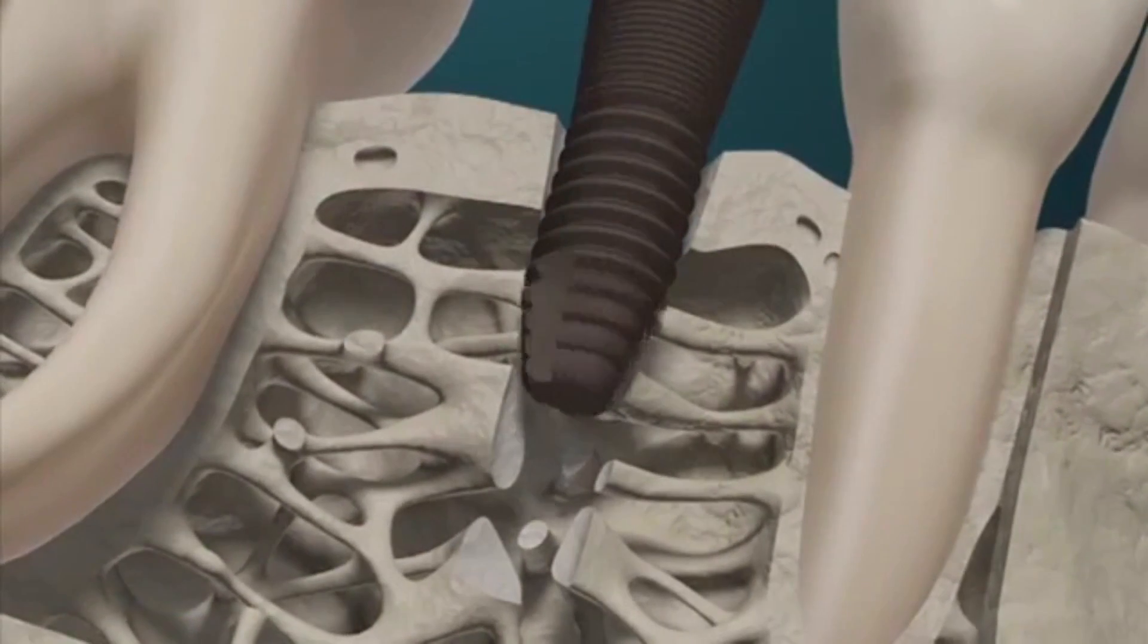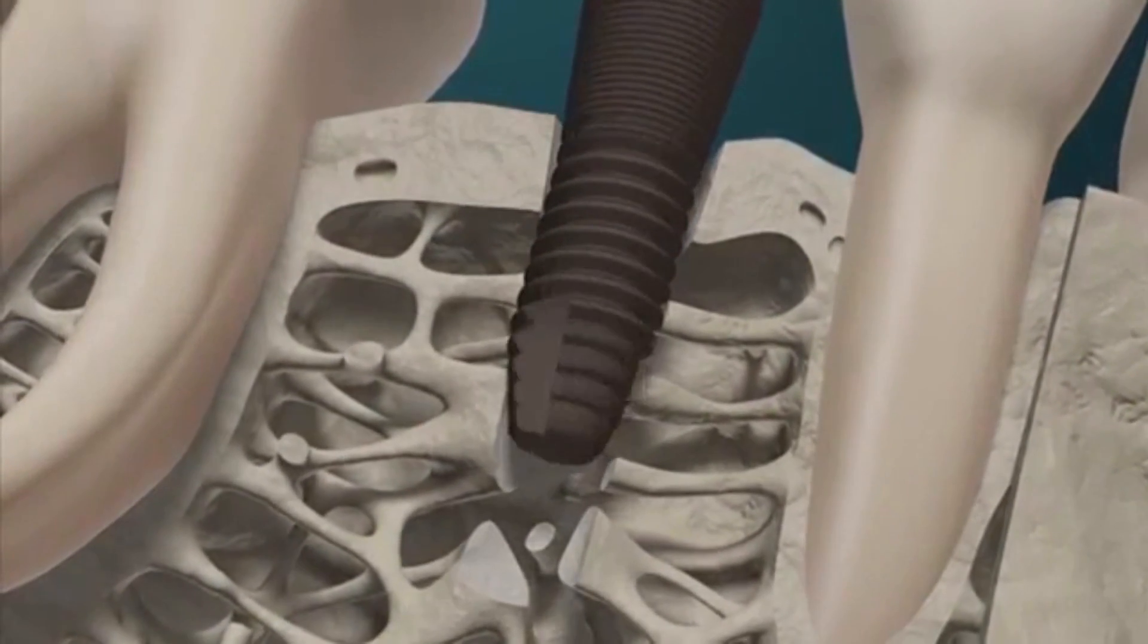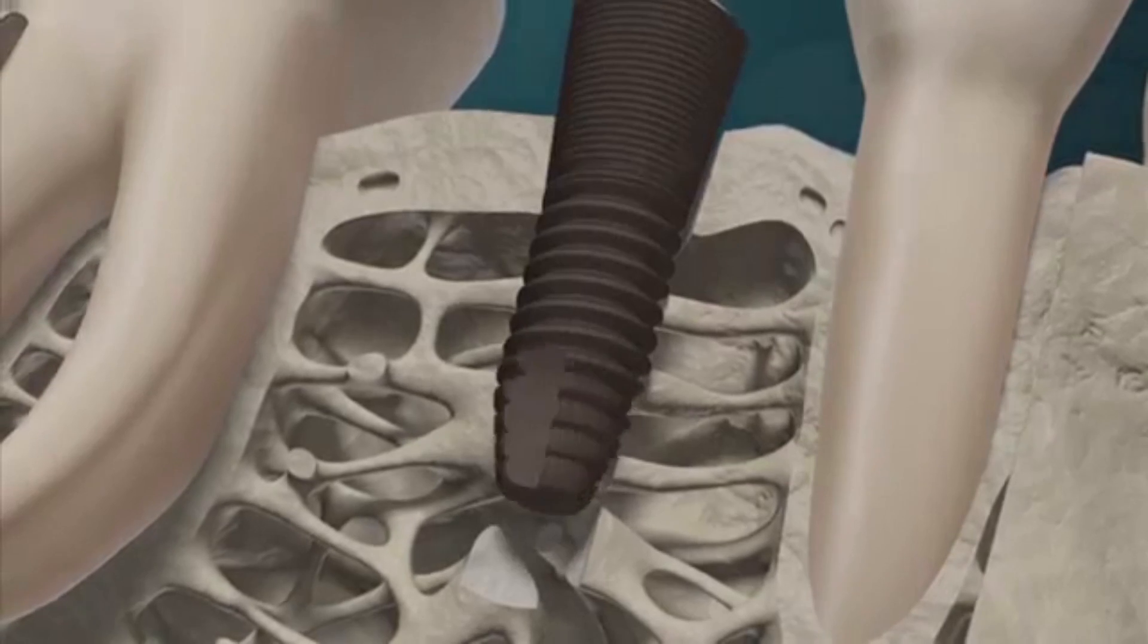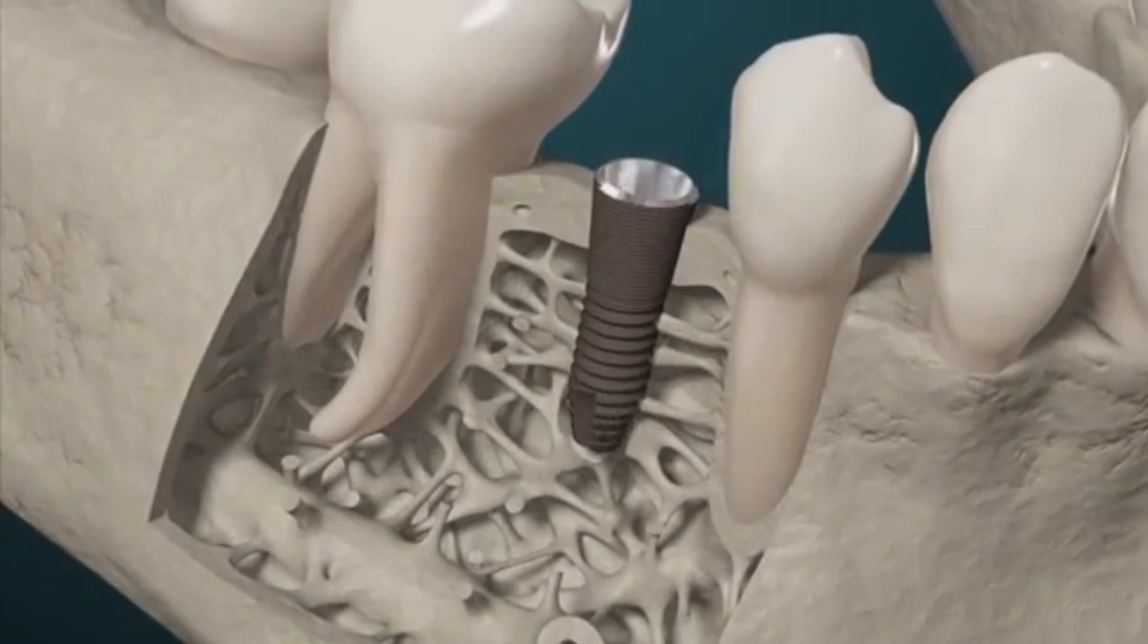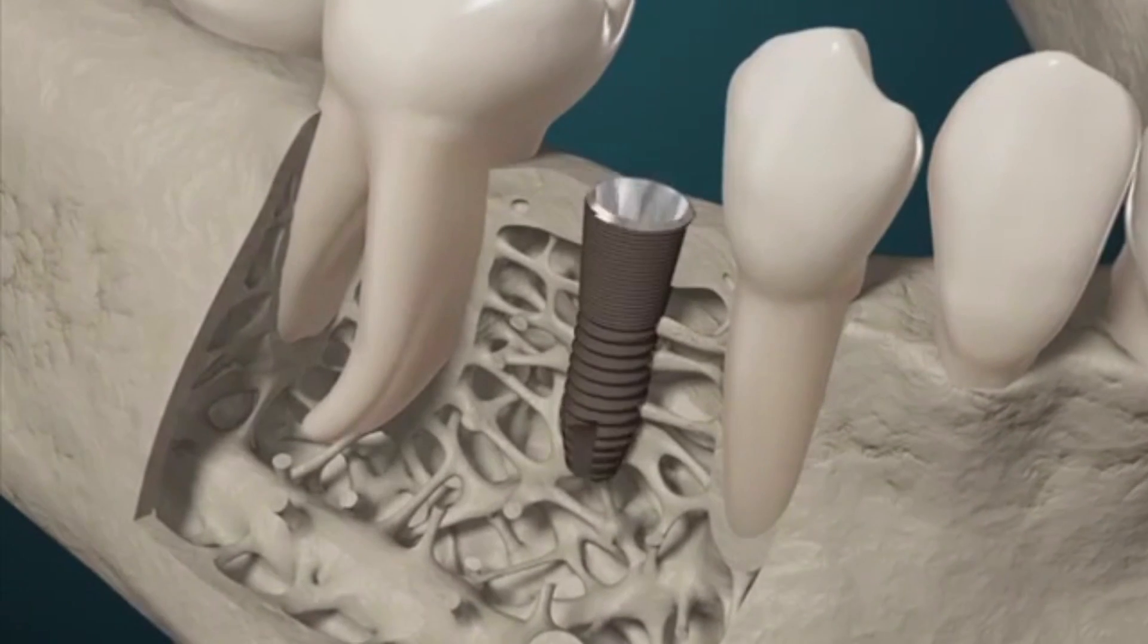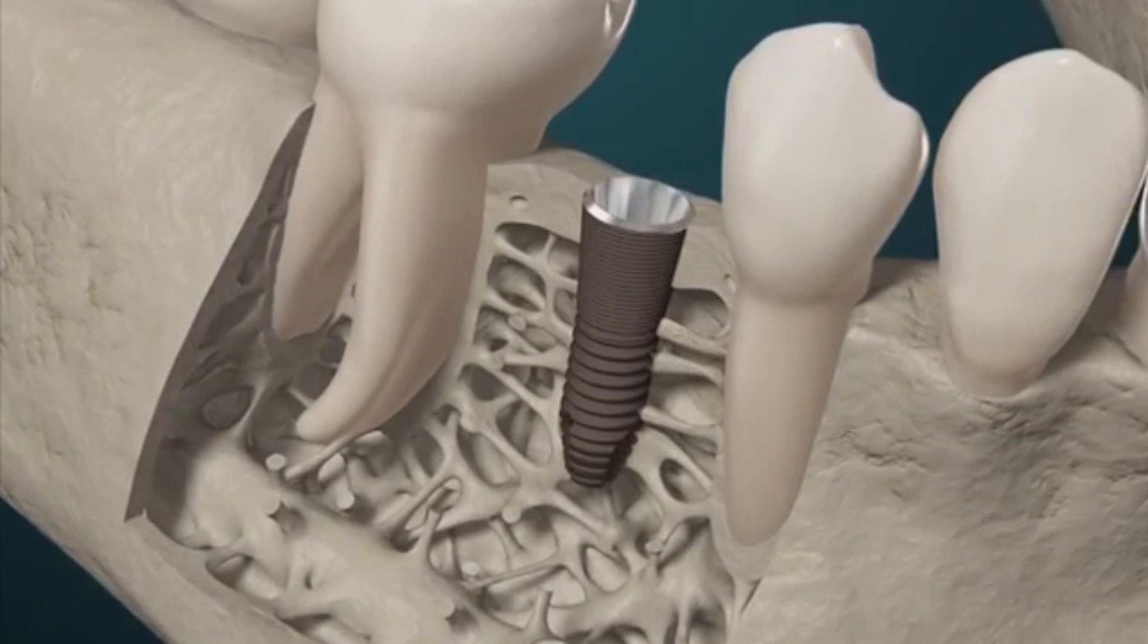Osseointegration, or secondary implant stability, requires a highly complex sequence of additional biodynamic processes. This is facilitated by finely tuned communication between the main actors of wound healing, the cells.